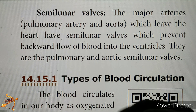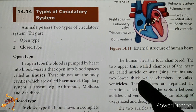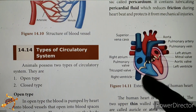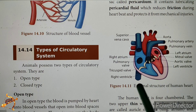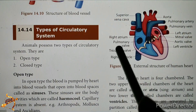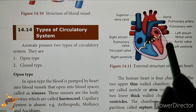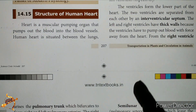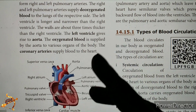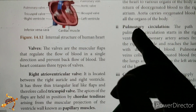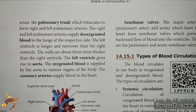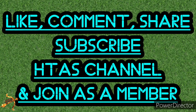In this video, we covered the full internal and external structure of the human heart — the chambers (atrium and ventricle, right and left), the valves, and blood circulation. If you liked this video, please like and share with your friends, subscribe to this channel, and join the Telegram channel linked in the description.